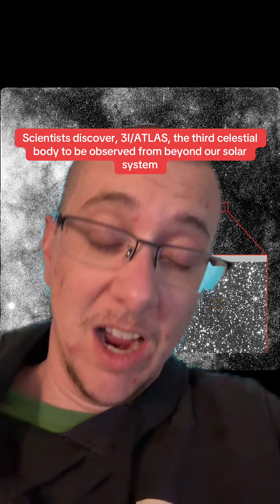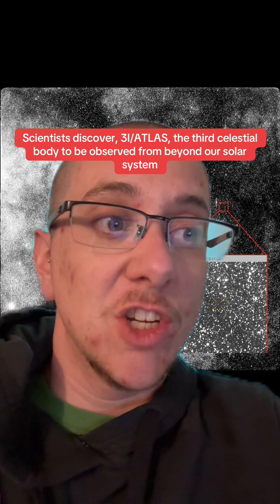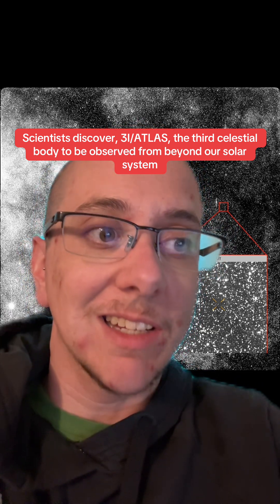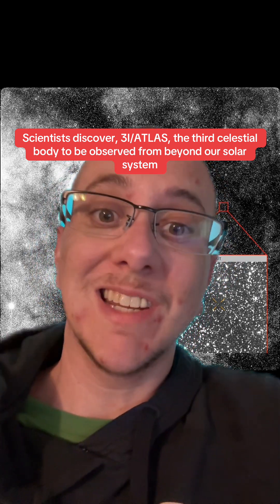Now scientists think that this is a comet and they believe that this came from the direction of the Sagittarius constellation, and they can detect movements from this back to June 14th.